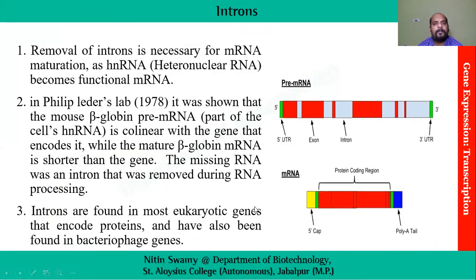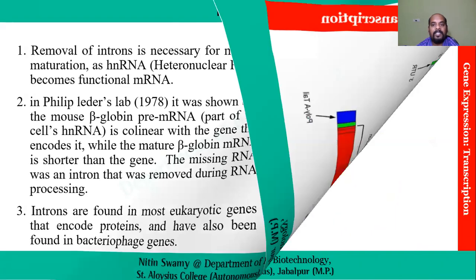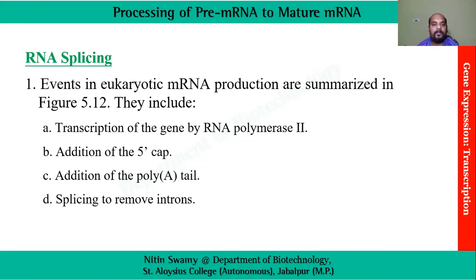One very important process is the removal of introns. Introns are non-coding parts of the genome which have to be removed because they would not contribute anything during translation. Philip Liddell was the first person to find that mouse beta-globin pre-mRNA is collinear with the gene that encodes it, while the mature globin mRNA is shorter than the gene. They found that introns were missing in the mature mRNA, proving that intron removal is a very important mechanism.